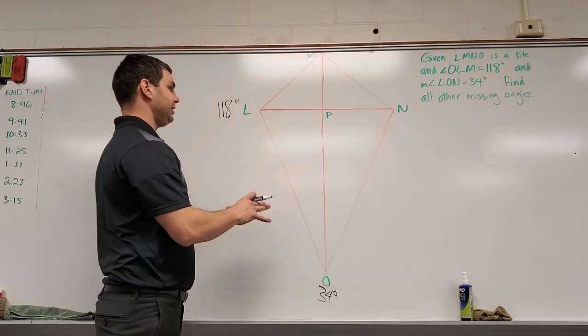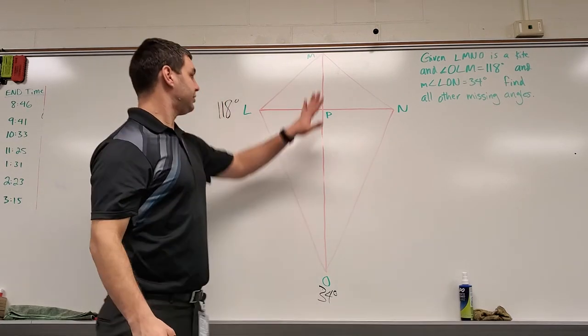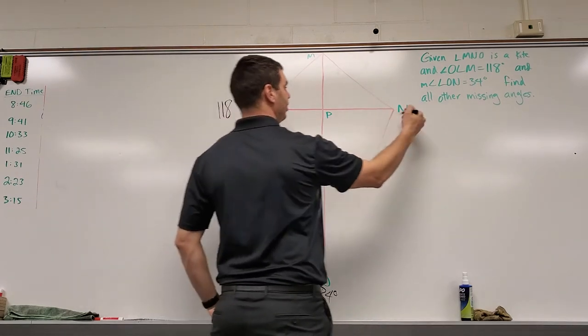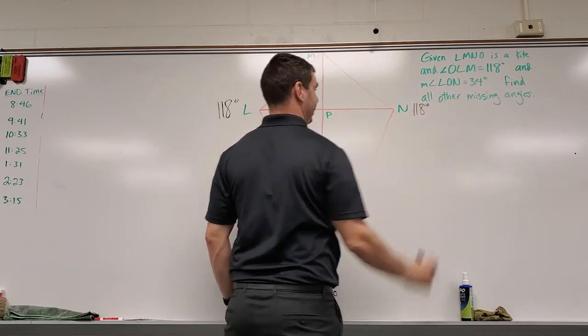So first off, in a kite, the shoulders, if you will, can I picture this as a person standing up here, the shoulders of a kite are going to be the same. So if this is 118 over here, angle N also has to be 118 degrees.